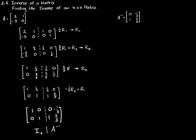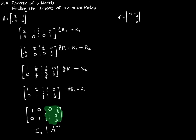So this is another method by which we can find the inverse of a matrix A, using the elementary row operations we're already familiar with. What we've done is start with matrix A, concatenated with the identity matrix. We've ended up with the identity matrix concatenated with the inverse of matrix A.